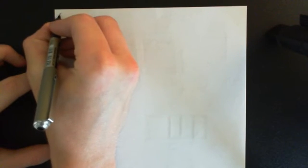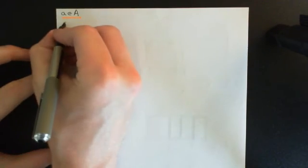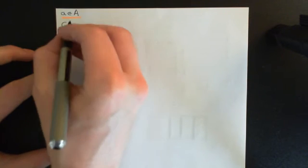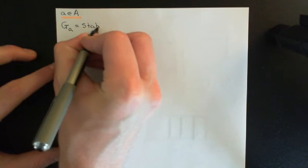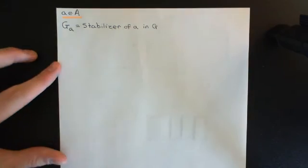Let's start with the definition of a stabilizer of A in the group G. An orbit of an element little a was a subset of the set capital A. What we're going to see is that the stabilizer of an element little a from the set capital A is actually a subgroup of the group capital G. So pick your favorite little a from the set capital A. What we're now going to construct is what's called the stabilizer of a in the group capital G. It's written as capital G with subscript little a, and this is read as the stabilizer of little a in the group capital G.